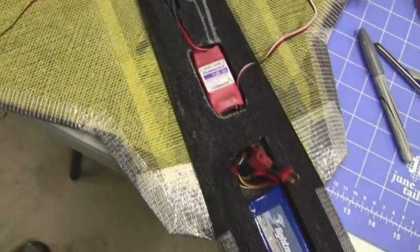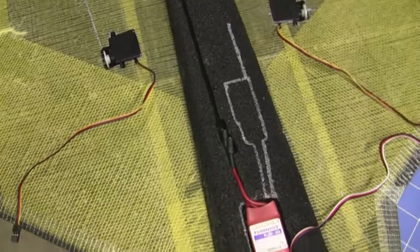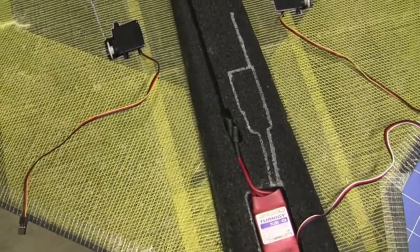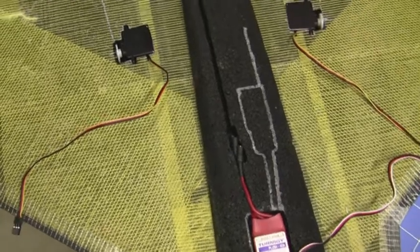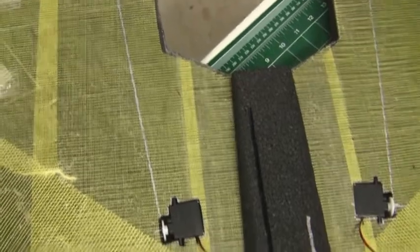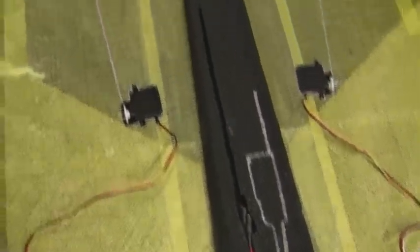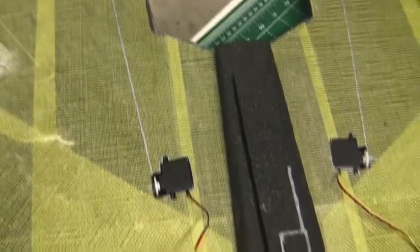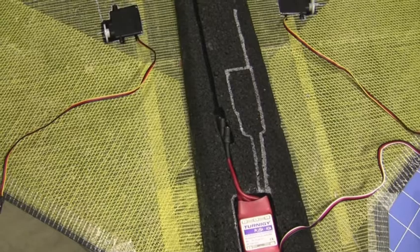I've got the speed controller test fit in here. Now I'm going to create another slot where it's marked up here on the fuselage. I'm going to create another cavity to put in the receiver. And if you can see here, I've also created a little channel that runs down the fuselage towards the back. That's where the wires are going to be run from the speed controller to the motor.